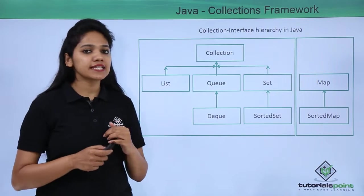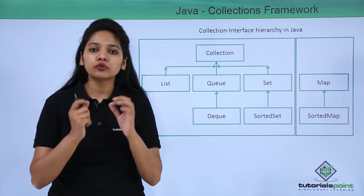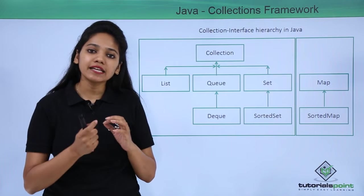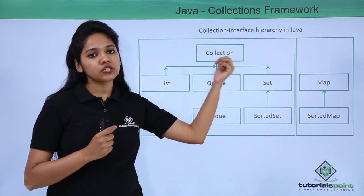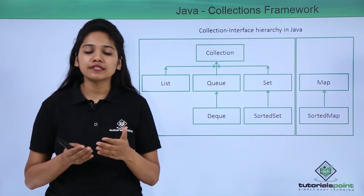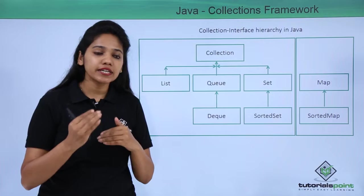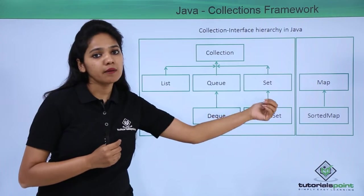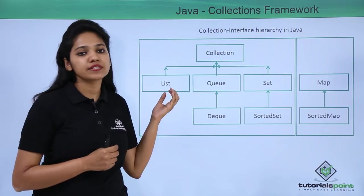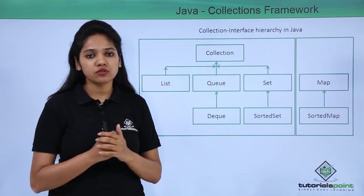There is a package called java.util package which holds the classes and interfaces for your collection. This collection interface encapsulates certain other sub-interfaces, and these interfaces are nothing but your List, Queue, Set, and so on.